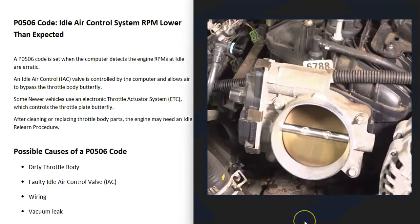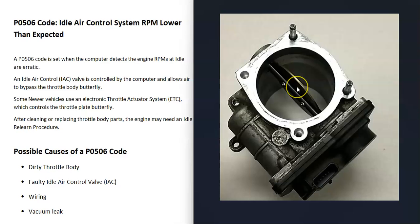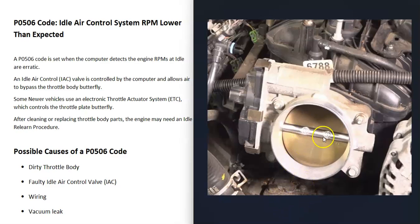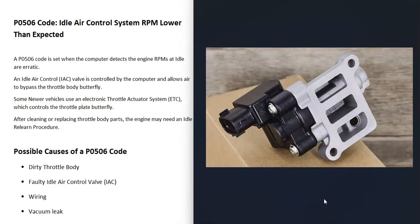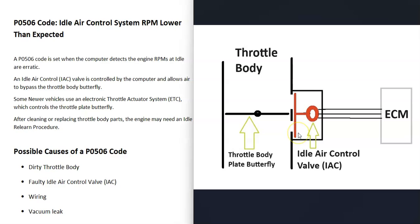Fuel-injected engines have what's called a throttle body that basically controls all the air going into the engine. Every time the gas pedal is pressed, there's a butterfly inside that opens up depending on where the gas pedal's at. This allows the computer to control the air-fuel ratio mixture going into the cylinders. But when the gas pedal is let go and that butterfly plate closes, the computer will take over and use what's called an idle air control valve.